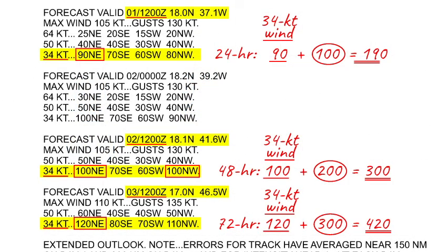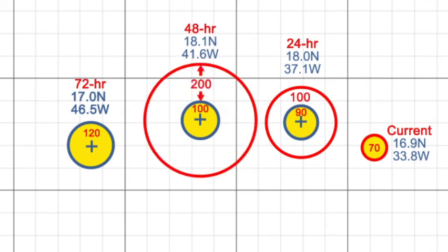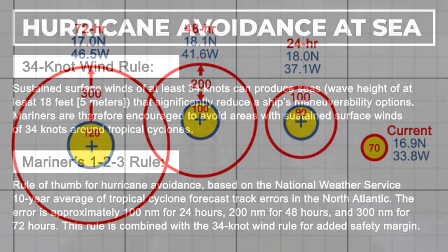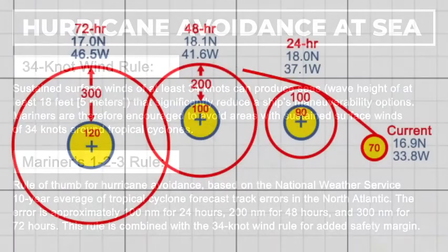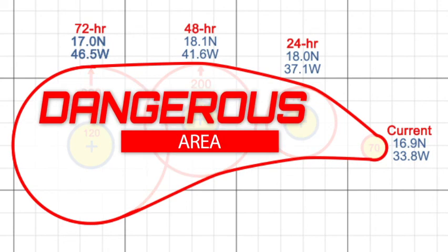To apply the 1-2-3 rule for storm avoidance to the position forecast, increase the 24-hour wind radius by 100 nautical miles, the 48-hour wind radius by 200 nautical miles, and the 72-hour wind radius by 300 nautical miles. Note, the 1-2-3 rule is based on the National Weather Service latest 10-year average tropical cyclone forecast errors in the North Atlantic. The error is approximately 100 nautical miles for 24 hours, 200 nautical miles for 48 hours, and 300 nautical miles for 72 hours. Draw one tangent to connect the top of each circle, and another to connect the bottoms. The enclosed area is considered dangerous and should be avoided.